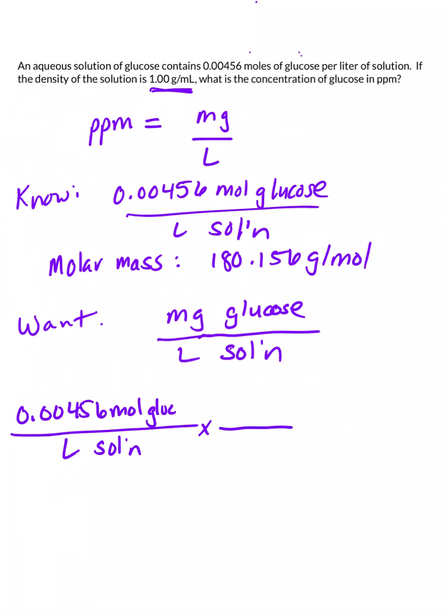To convert from moles to mass, we're going to use the molar mass. So, we have 1 mole here in the denominator, 180.156 grams of glucose per mole.